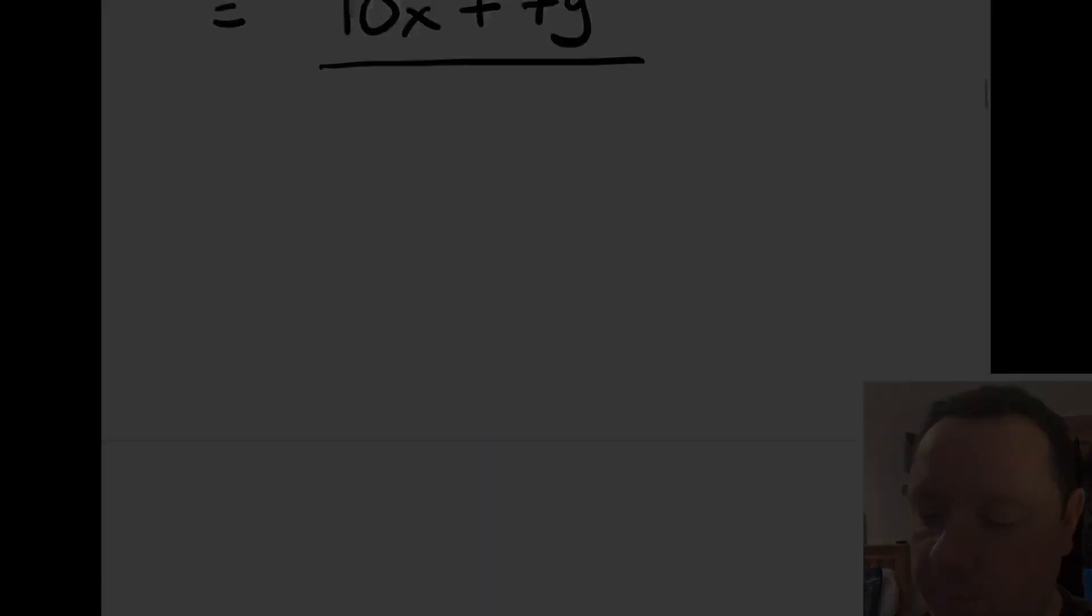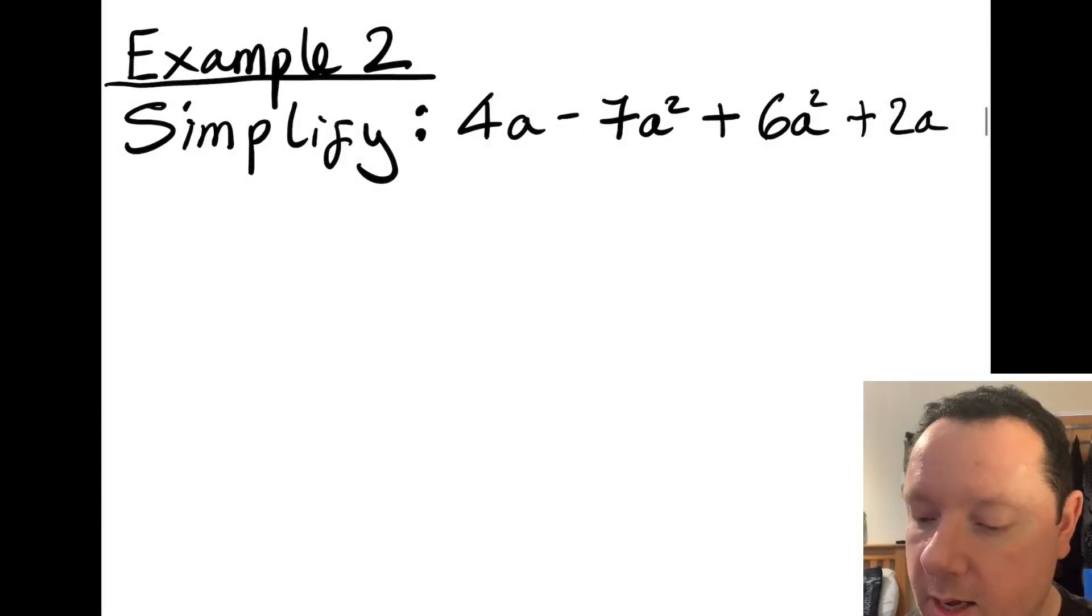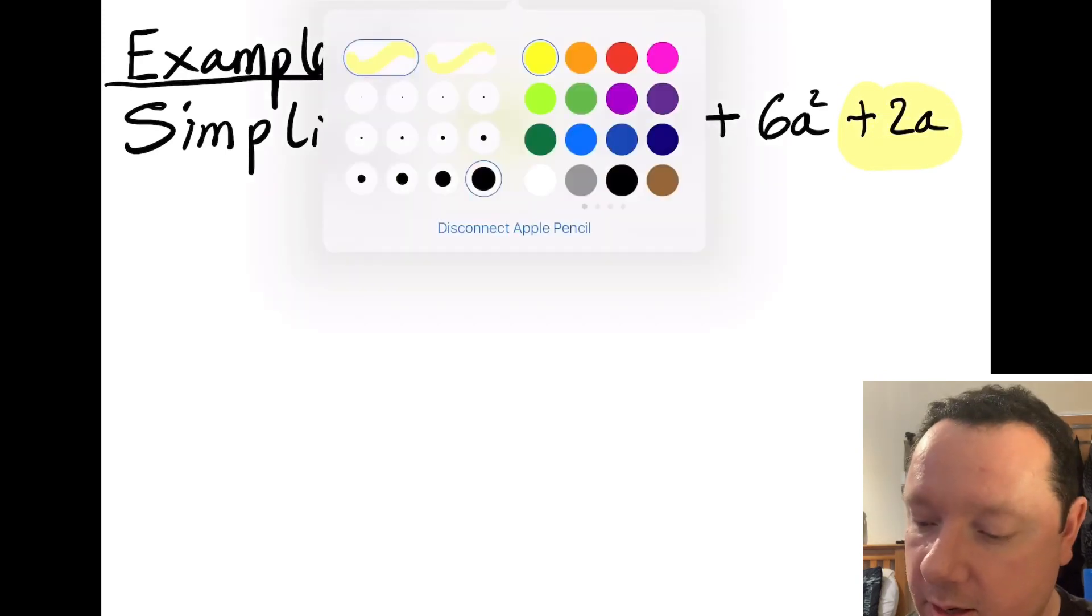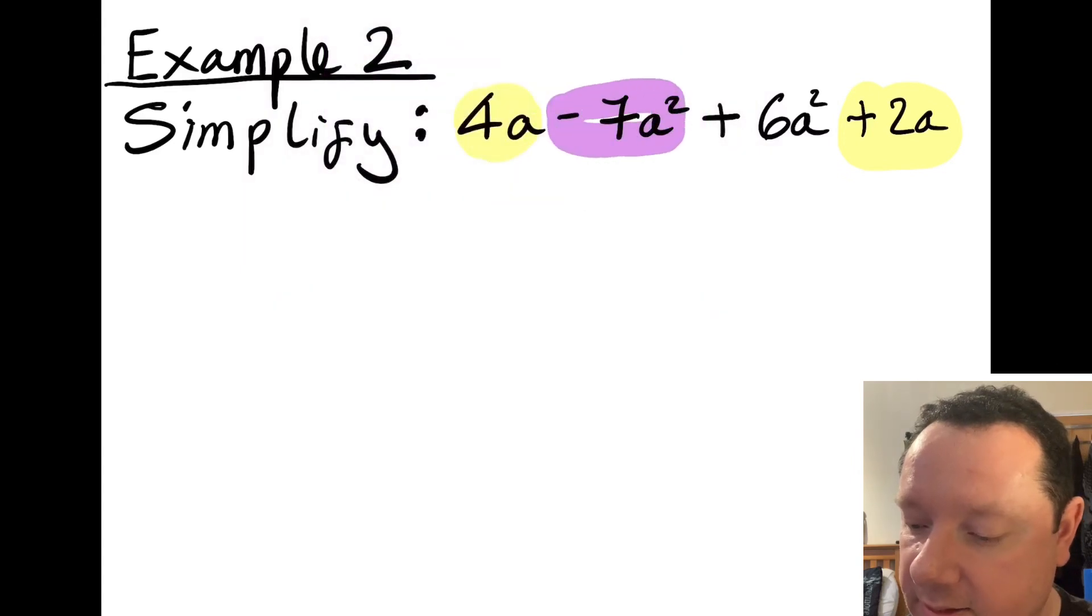Let's look at a second example. So example two says simplify 4a minus 7a squared plus 6a squared plus 2a. You'll notice there's a's in every single term there. But they're not the same. a is one term. But a squared is a different term because it's not exactly the same. So I've got my 4a and my plus 2a. Notice I'm highlighting the plus as well. They're together. And then I've also got my minus 7a squared and my plus 6a squared. They're the same because I've both got a squared.